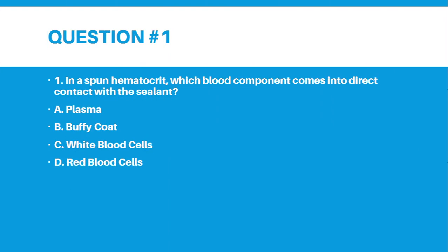Number 1: In a spun hematocrit, which blood cell component comes into direct contact with the sealant? Letter A, Plasma. Letter B, Buffy Coat. Letter C, White Blood Cells. Letter D, Red Blood Cells.